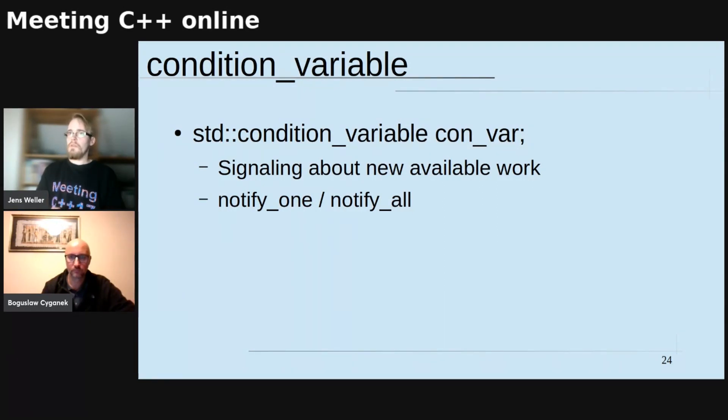Then you need a condition variable, which basically is signaling to a waiting thread that there is work available. And the thread pool itself then either can say, hey, we just have one job, so we notify one, and one thread gets woken up and gets to do the job. And if there is a method to add more than one job, then we could say notify all.